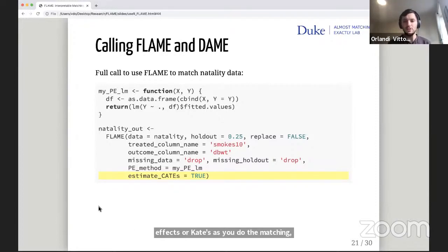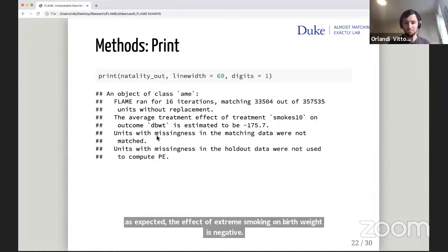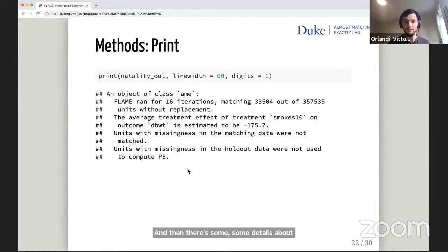So as I mentioned, once you run this, you're going to get an object of class AME. When you print it, you just get some information about the number of matches made and an estimated treatment effect. Here we have that the estimated treatment effect is around negative 180. This is grams, so that corresponds to around negative six ounces. So as expected, the effect of extreme smoking on birth weight is negative. And then there's some details about how missingness if present in the data was handled.